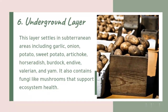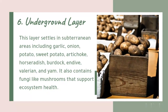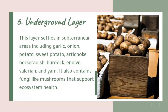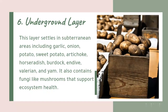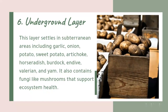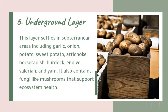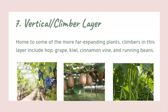Layer 6: Underground layer. This layer occupies subterranean areas and includes garlic, onion, potato, sweet potato, Jerusalem artichoke, horseradish, burdock, endive, valerian, and yam. It also contains fungi like mushrooms that support ecosystem health.